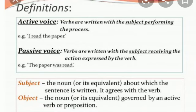In active voice, sentences are written with the subject. The sentence structure is: subject plus verb plus object. This is the simplest structure. In an active voice sentence, the verb is written with the subject performing the action — like 'I read the paper.' In passive voice, words are written with the subject receiving the action, expressed by the verb. For example, in passive voice: 'The paper was read.' The subject is basically what the sentence is about, and the object is governed by the active verb.